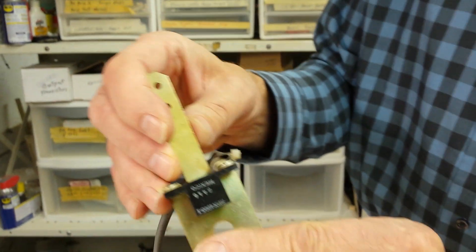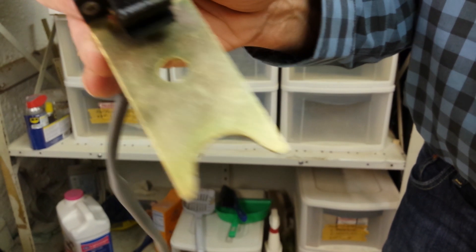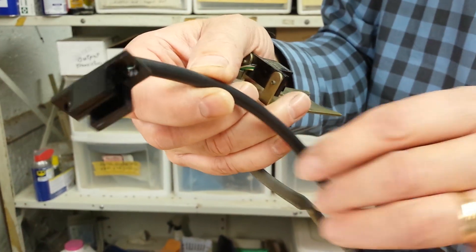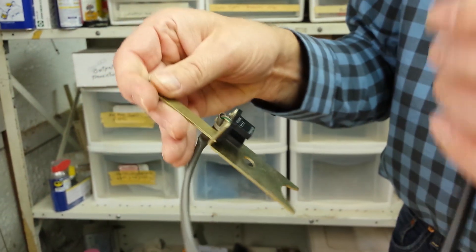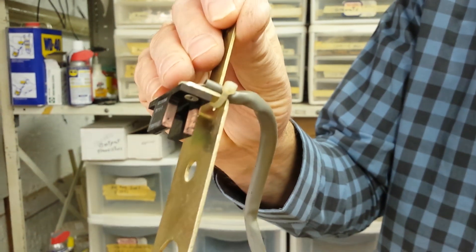So this is the switch assembly. And this is the new switch assembly. As you notice, there's no bracket. So you're going to be mounting this onto this.